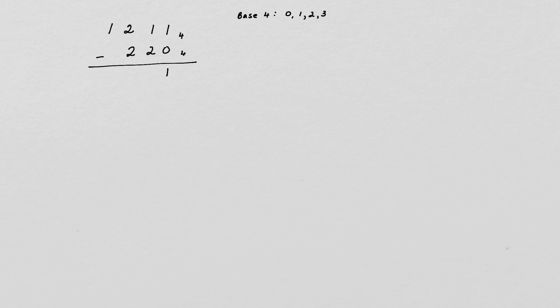Then we go over to the second column, and here we can't subtract. We've got 1 minus 2, and we can't do that as it is. So we're going to need to borrow from the next place value.